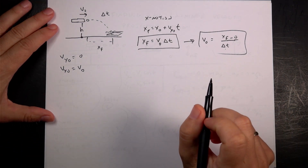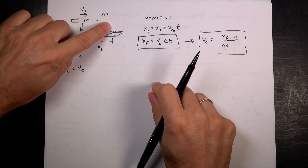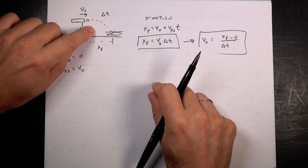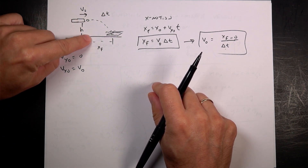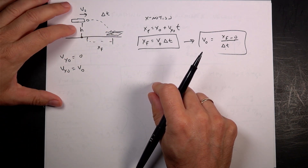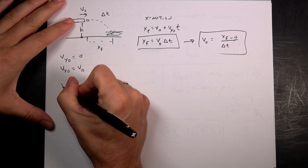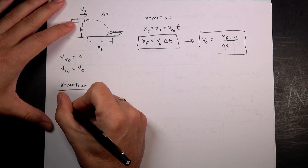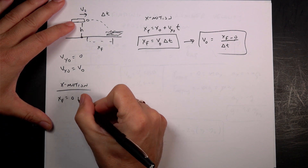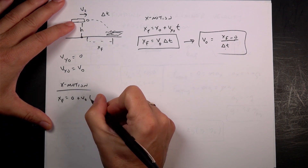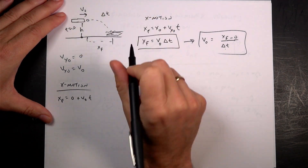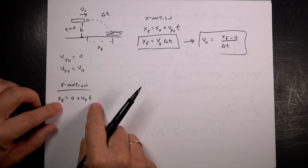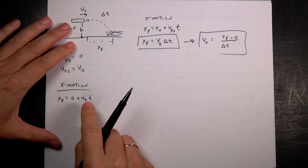Let's look at another method. Again I want to shoot this horizontally, but I don't want to measure the time because it's really difficult. So instead I'm going to measure the height and the horizontal distance. In the x motion: x_final = 0 + v₀·t. If I knew the time I could solve for v₀, so let's look at the y motion to find the time.